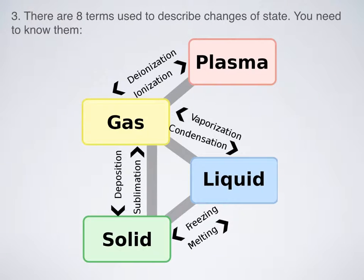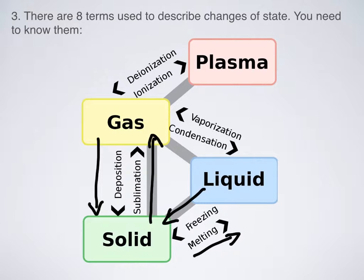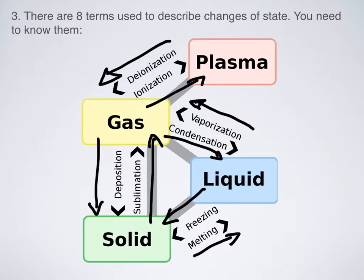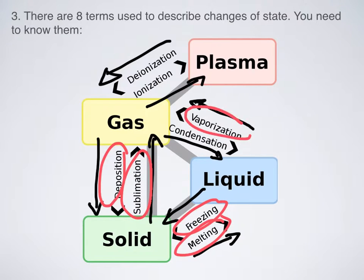So what do we call these phase changes? You have this diagram — this is probably one of the most important parts. Everybody knows that going from liquid to solid is freezing, and the opposite is melting. But sublimation is going from solid to gas, and the opposite — going from gas to solid — is called deposition. Going from gas to liquid is condensation. Going from liquid to gas is vaporization or boiling. Gas to plasma is ionization, and plasma to gas is deionization. Make sure you fill in these terms on your diagram.